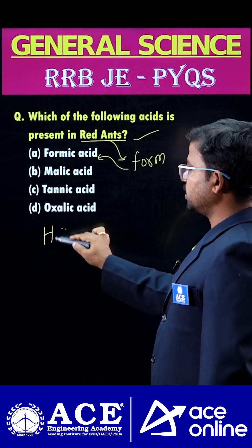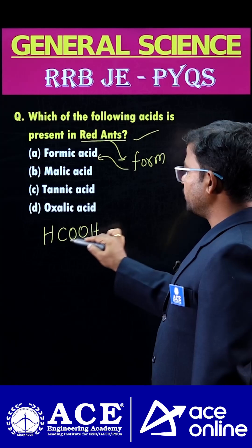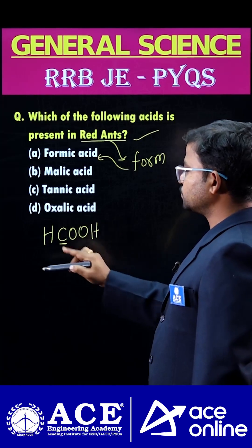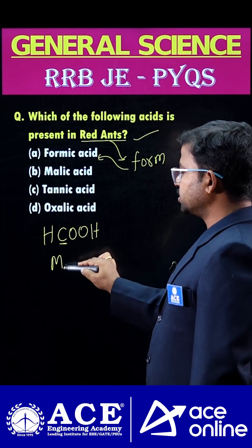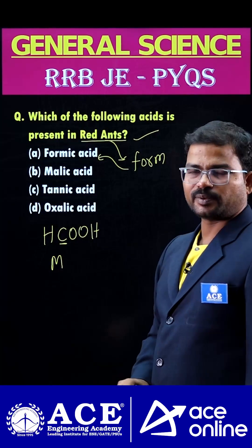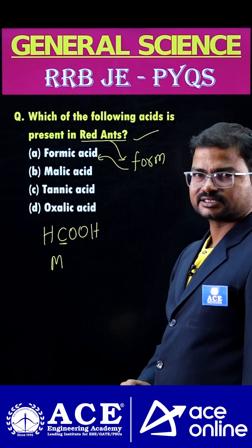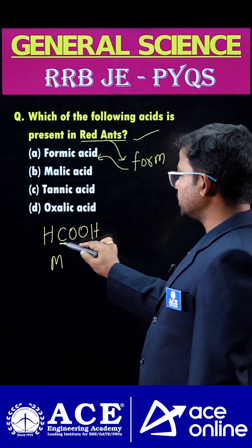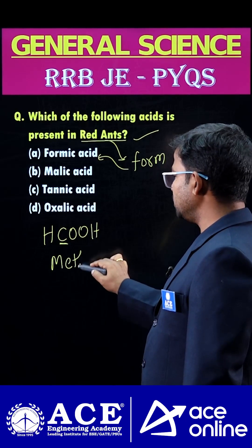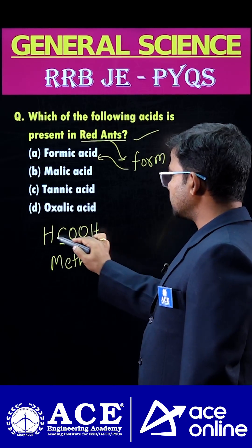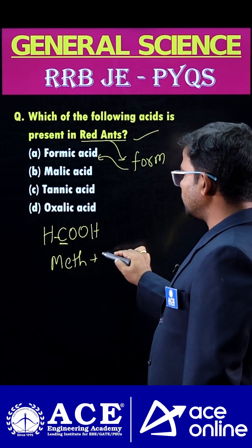So this is the formula: H-C-O-O-H. How many carbons does it have? One carbon. If you consider the IUPAC nomenclature of formic acid, it is treated like that — so between these molecules, we have a single bond.